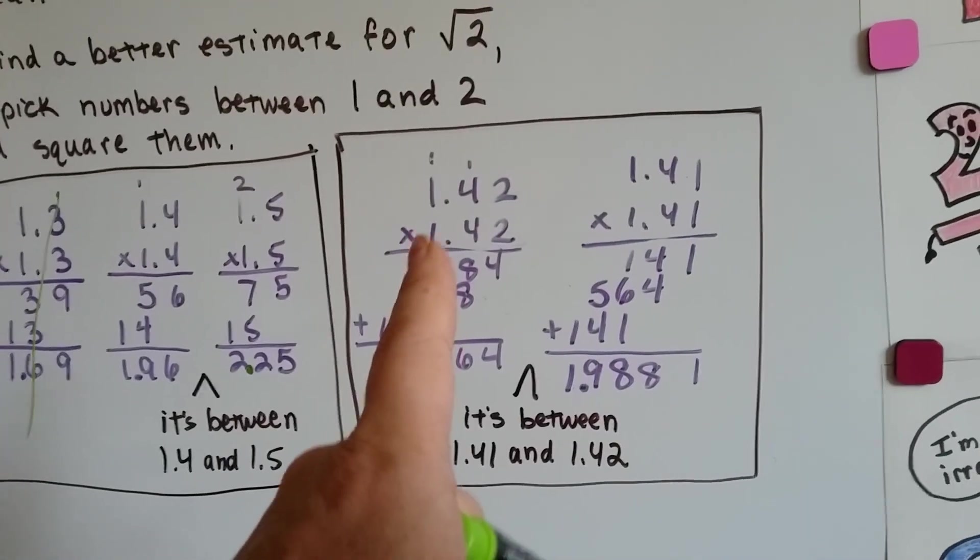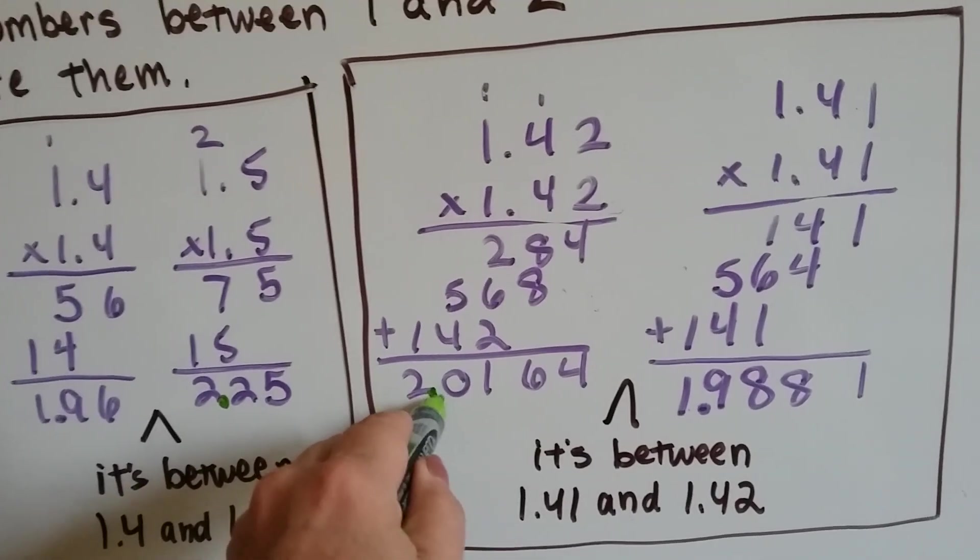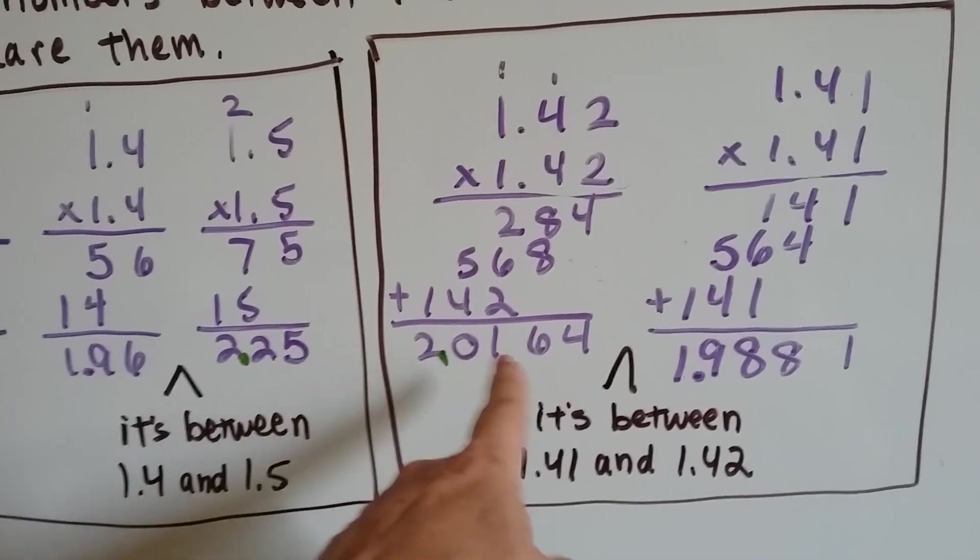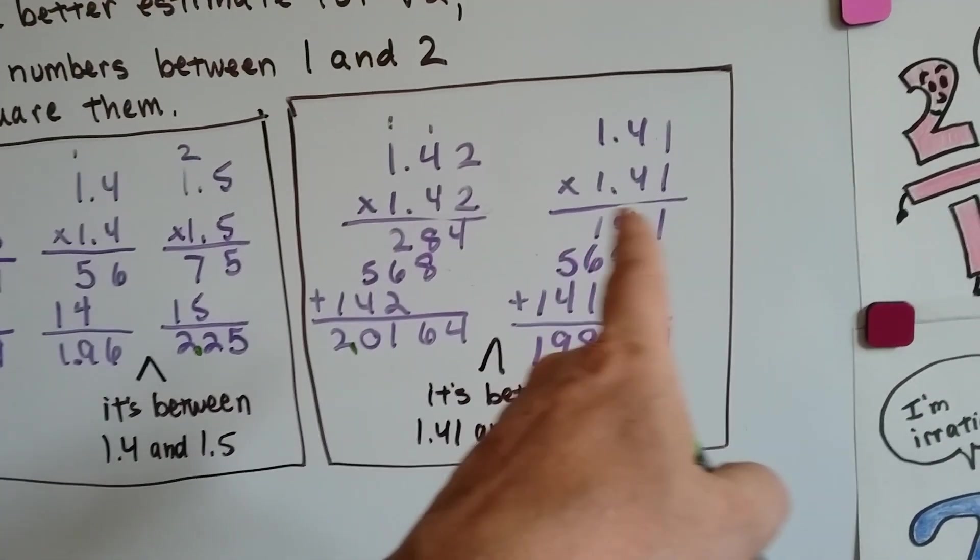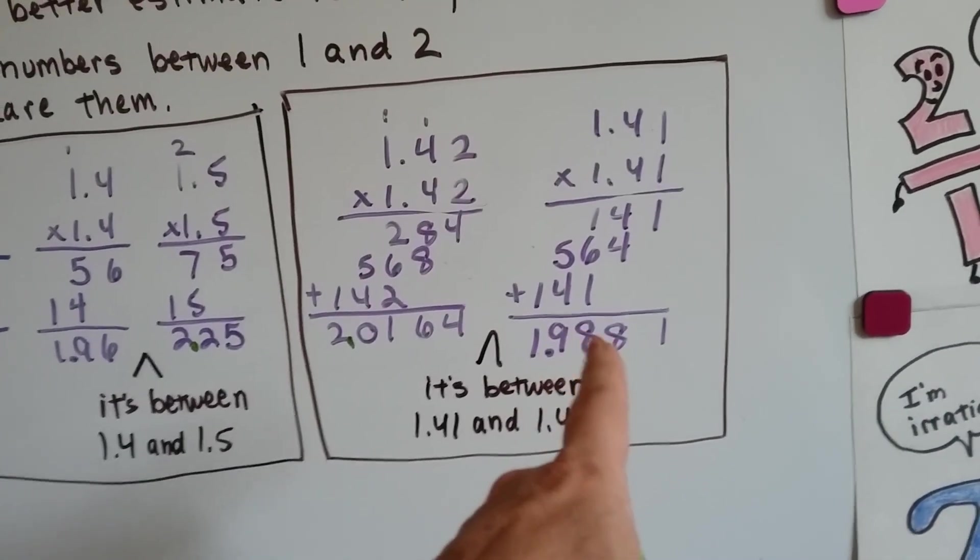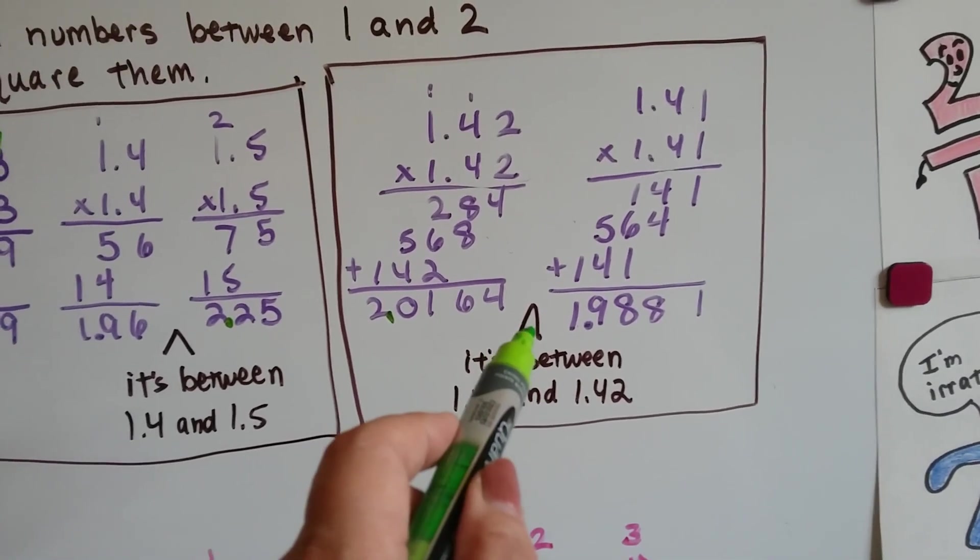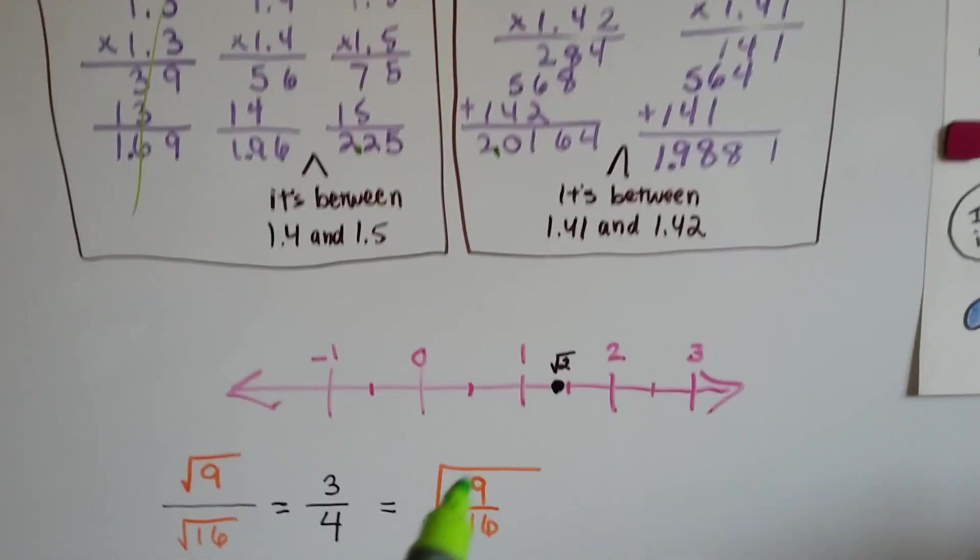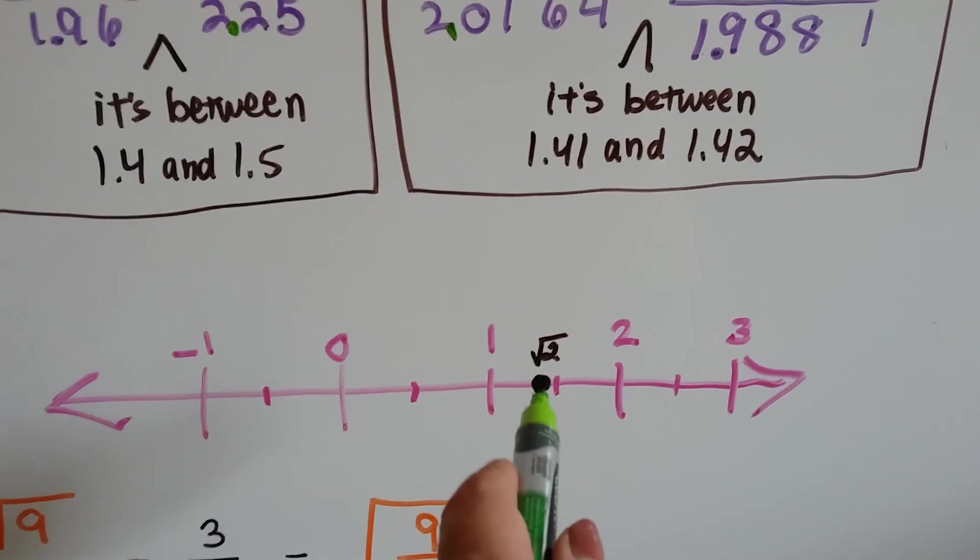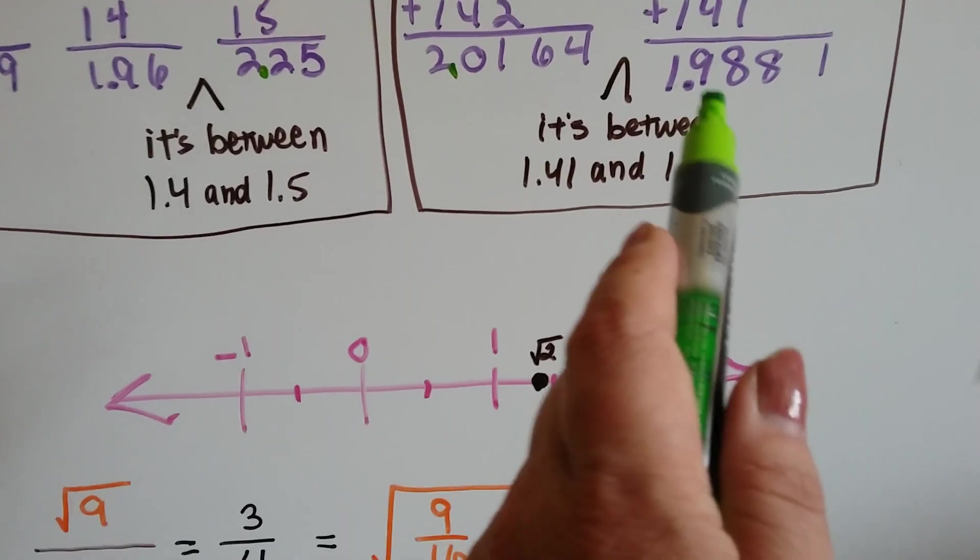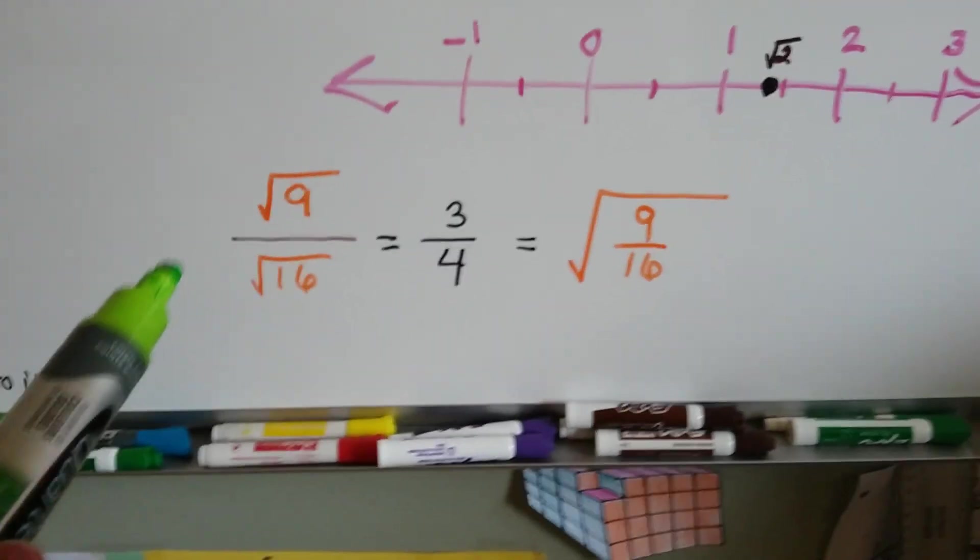So I tried 1.42. Well, that came out to 2.0164, so that was too big. I tried 1.41 multiplied to 1.41 and I got 1.9881. So now I know it's in between 1.41 and 1.42. I got it pretty close. On a number line, it wouldn't be quite 1.5, it would just be right before 1.5, so it'd be about right there - that would be the square root of 2. So I still didn't quite pinpoint it, so really it's an approximation.